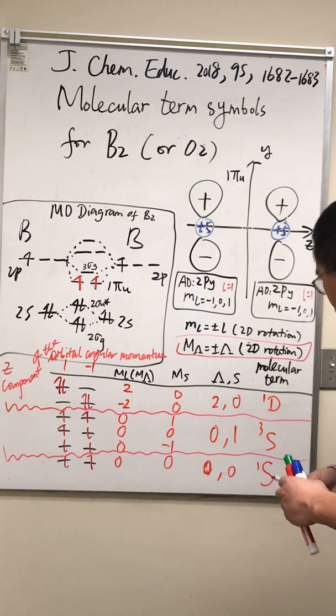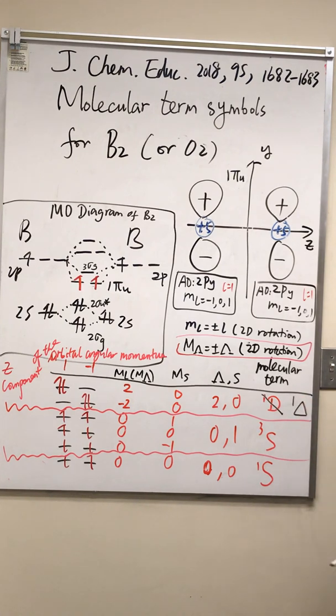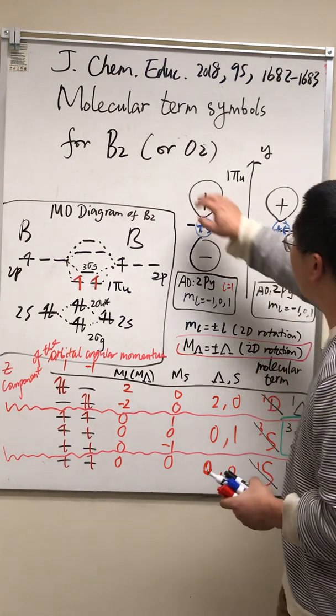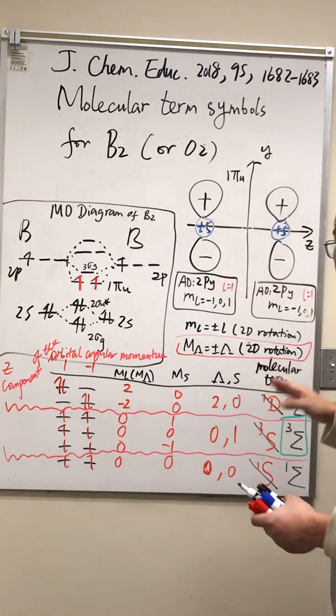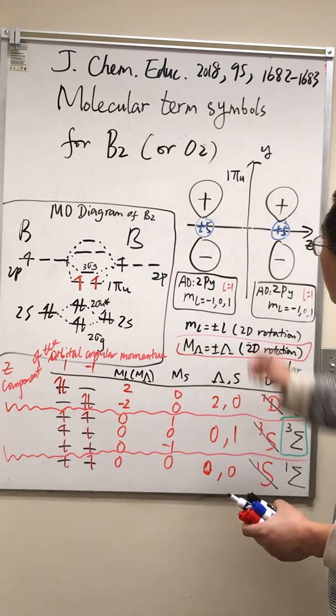There's one more thing we need to do. In molecular term symbols we use Greek letters instead of English letters, so it should be one delta, three sigma, and one sigma. Which one is the lowest energy? We first look for the largest s value. Therefore three sigma is the lowest energy.